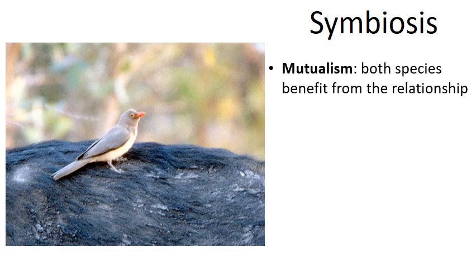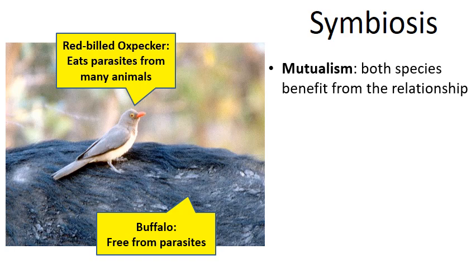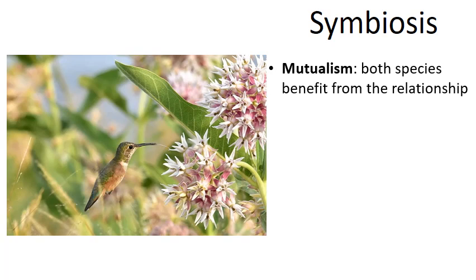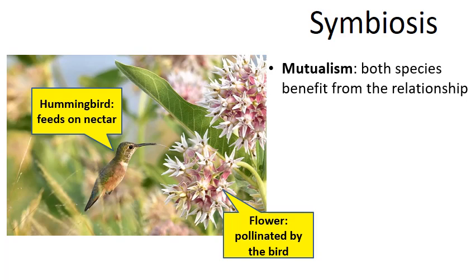Another mutualism example is cleaner organisms. The red-billed oxpecker eats parasites off the bodies of other animals like buffalo — the buffalo benefits by being free of parasites, and the bird gets a meal. There are also small fish that clean the mouths of bigger fish, birds that clean the mouths of crocodiles, and shrimp that eat parasites off crabs and other ocean life. Hummingbirds and flowers are another classic example: the hummingbird feeds on nectar and the flower receives pollination as the hummingbird transfers pollen from flower to flower.